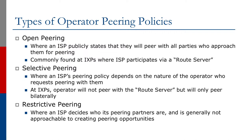Selective peering is where an ISP's peering policy depends on the nature of the operator who requests peering with them. At exchange points, operators will not peer with the route server, but will only peer bilaterally. And finally, there is restrictive peering, where an ISP decides who its peering partners are and is generally not approachable to creating peering opportunities.